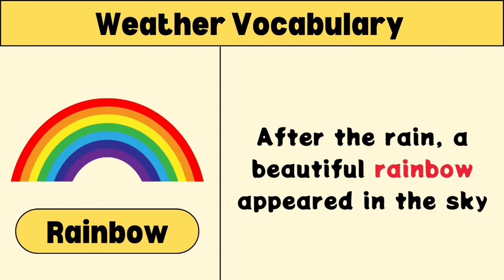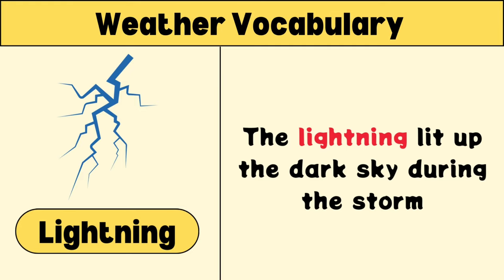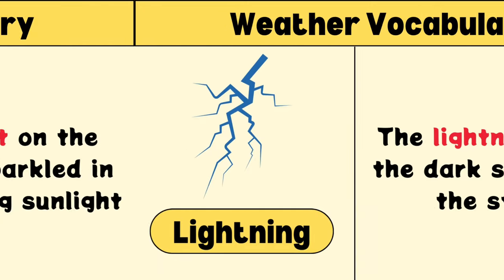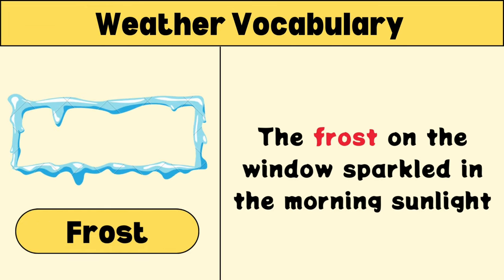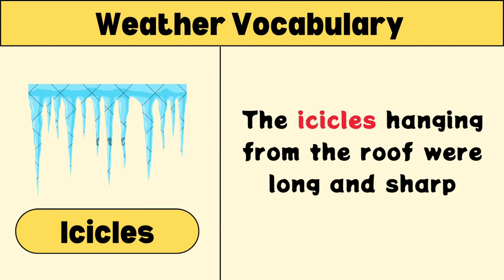Rainbow: after the rain, a beautiful rainbow appeared in the sky. Lightning: the lightning lit up the dark sky during the storm. Frost: the frost on the window sparkled in the morning sunlight. Icicles: the icicles hanging from the roof were long and sharp.